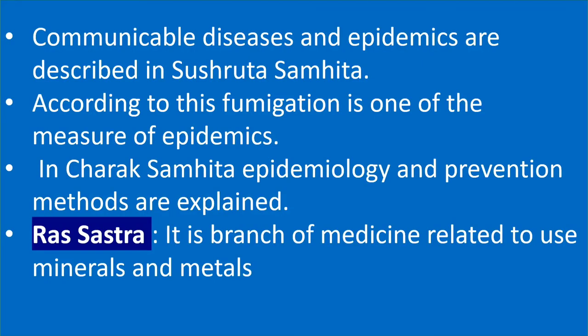Communicable diseases and epidemics are described in the Sushruta Samhita, meaning Ayurveda contains an elaborate study of diseases which can spread from an infected person to a healthy person, as well as epidemics affecting particular regions. Nowadays we are facing the COVID-19 pandemic. According to Ayurveda, fumigation is one of the measures to control epidemics.